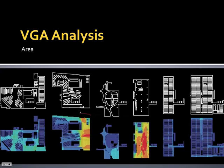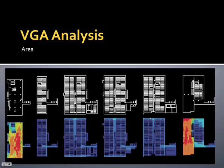Looking at VGA area analysis, not surprisingly the areas with the largest fields of view are the three key public areas in the building: level 3, which is the living room; level 5, the mixing chamber; and the reading room on level 10.